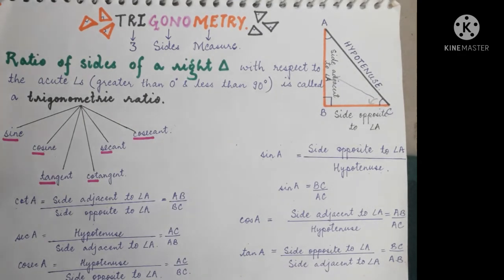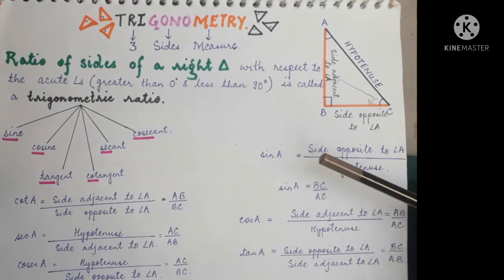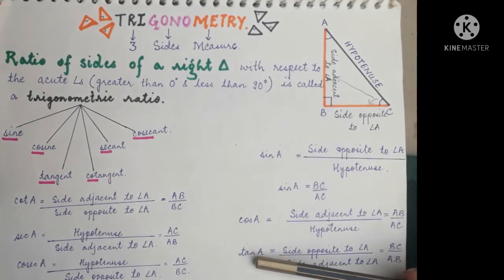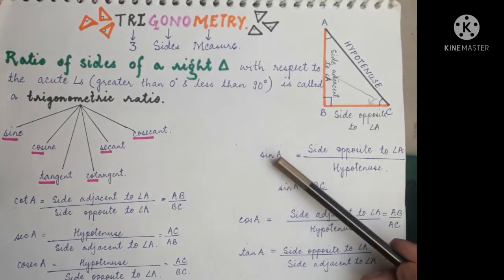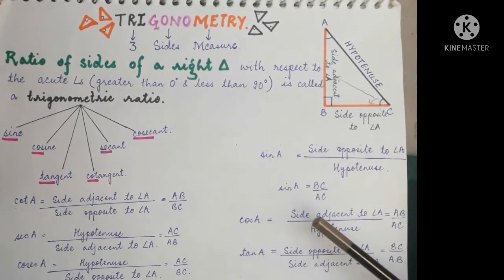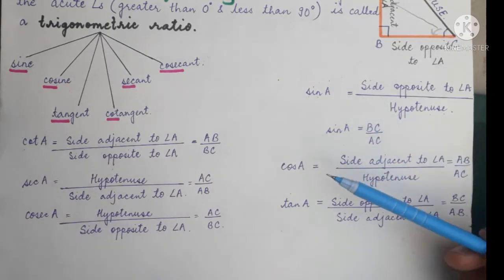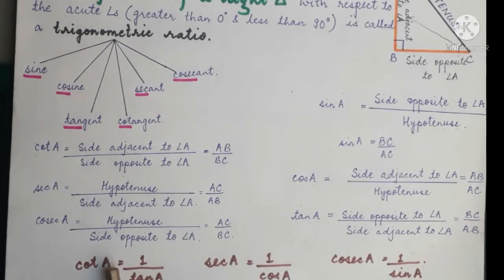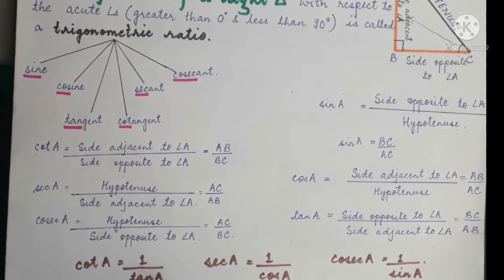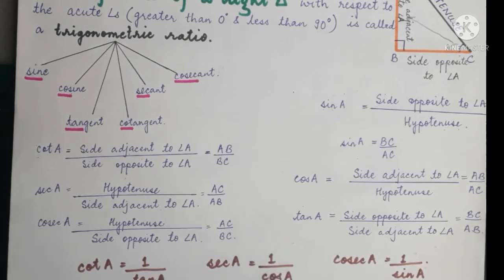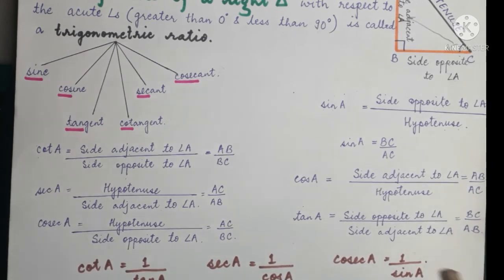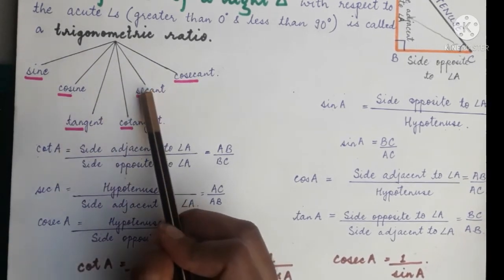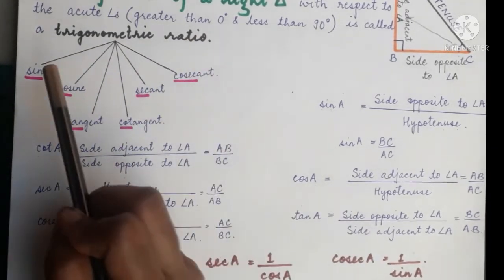Now it is time to learn a very easy way to find the values of all these trigonometric ratios. You just need to learn the values of sin A, cos A, and tan A. Cot A, sec A, and cosec A are calculated accordingly using reciprocals: cot A is equal to 1 upon tan A, so cot A is the reciprocal of tan A. Similarly, sec A is the reciprocal of cos A, and cosec A is the reciprocal of sine A.